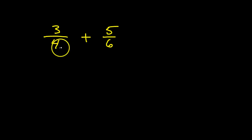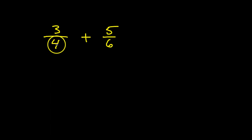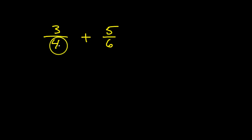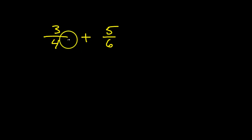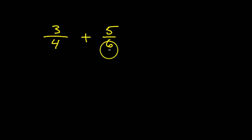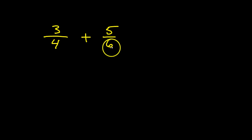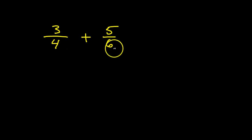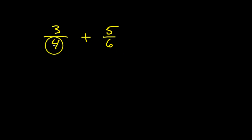The concept is you ask yourself: by multiplication, 4 can become 8 or 12 or 16 — doing 2 times 4, 3 times 4, 4 times 4. Using multiplication, 6 can become 12 or 18 or 24. So you want the smallest number possible that you can turn both of these numbers into.